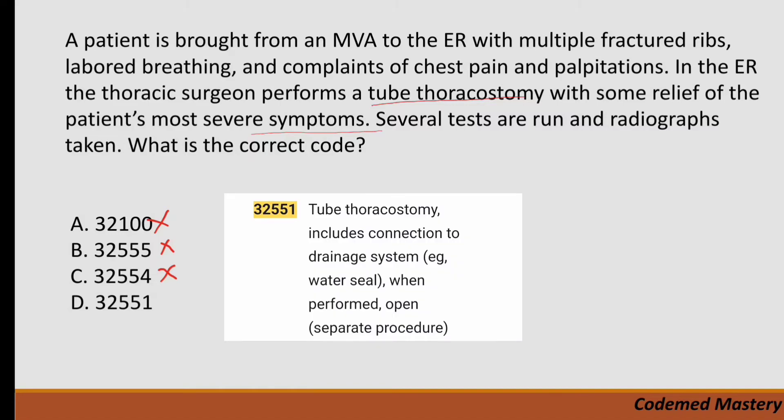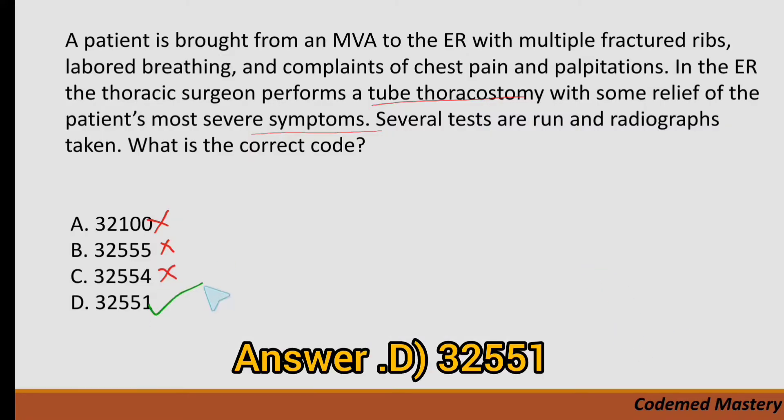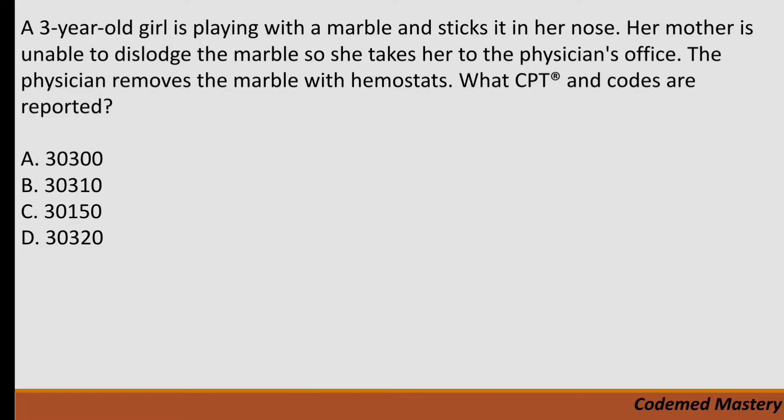32551 is exactly the right code — tube thoracostomy. That is the right answer.